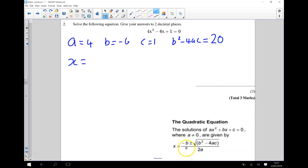So it's plus or minus but I'm going to do the plus, plus the square root of b squared take away 4ac which is 20 divided by 2a which is 2 times 4 which is 8.